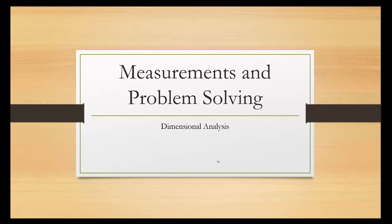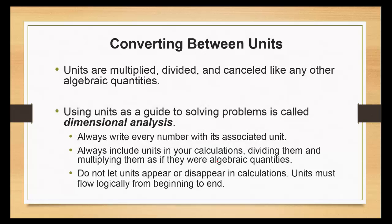In this tutorial we will be discussing dimensional analysis, or how to perform conversions. In science you have to convert between units an awful lot. Units are multiplied, divided, and canceled out like any other algebraic quantity. Using units as a guide to solving problems is called dimensional analysis. Always write the number with the associated unit — you need to write your units, you cannot be lazy with those. Always include units in your calculations, dividing and multiplying them as algebraic quantities. Do not let units appear or disappear in calculations; units must flow logically from beginning to end.